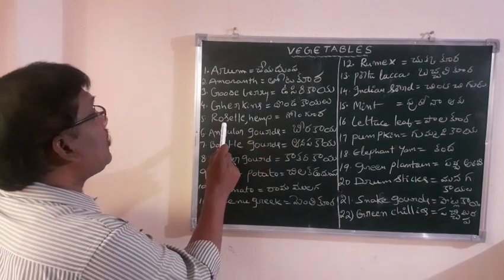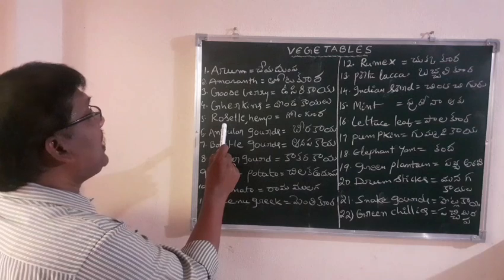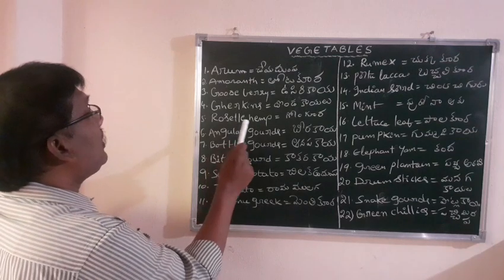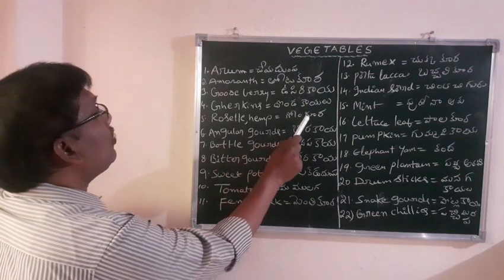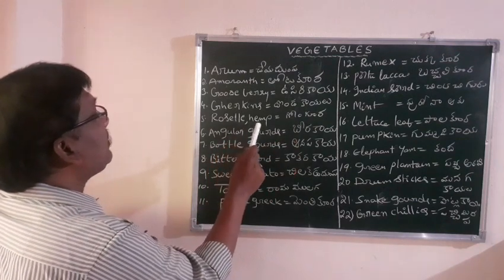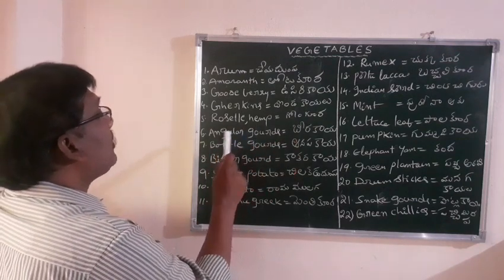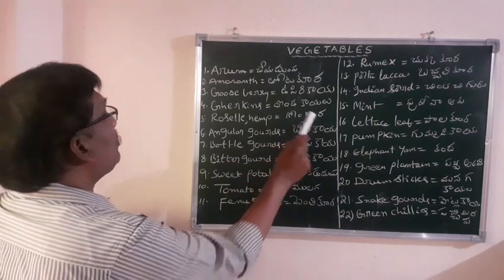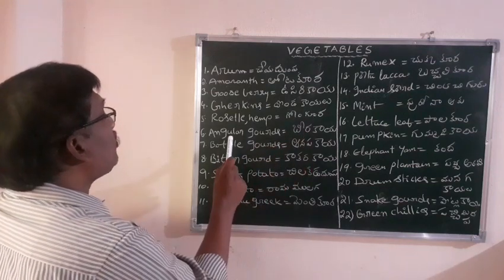Fifth word: Roselle. R-O-S-E-L-L-E. Roselle means gongura.